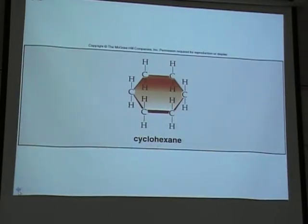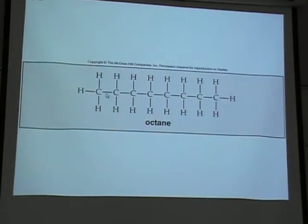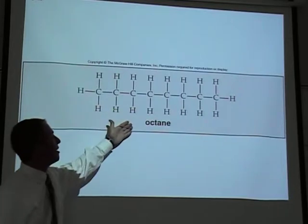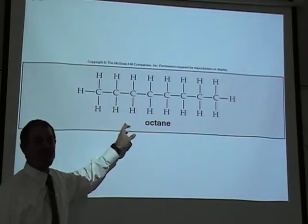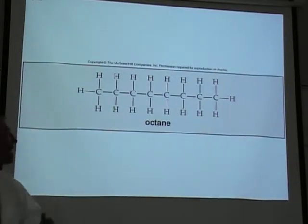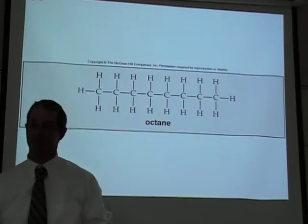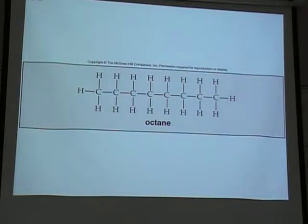Here's a molecule called cyclohexane. Hexane because it has six carbons. Cyclo because they go around in a circle and bond with one another. Each line you see between atoms is a covalent bond. If it had seven carbons, it would be called heptane. Six carbons is hexane. Five carbons is pentane. Ane means it's all single bonds between all the carbons.